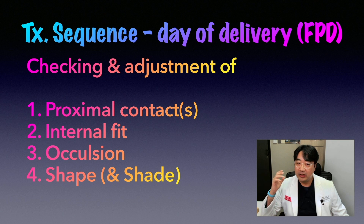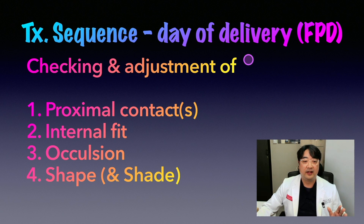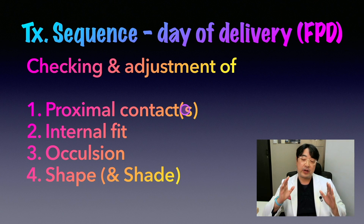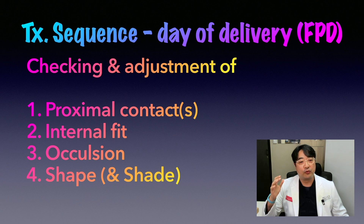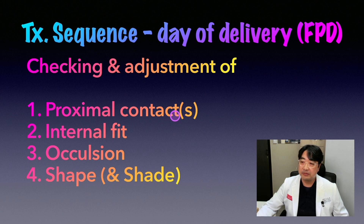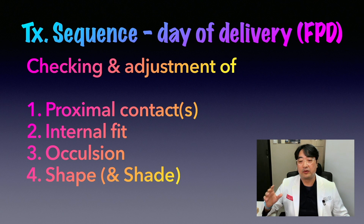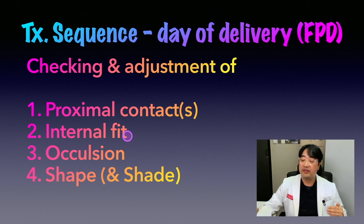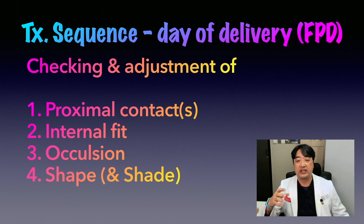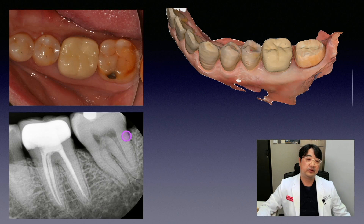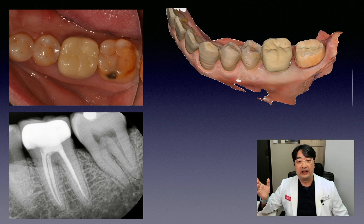These are the clinical steps we follow on the day of crown or any fixed restoration seating. We need to check and adjust proximal contacts first. If proximal contacts are too tight, the crown will not seat all the way down. After adjustment of proximal contact, we need to check the internal fit to see if the crown seats properly and closes all the margins, then proceed to occlusal adjustment. These are the steps we should do for every single restoration. Here I have a case requiring a single crown for the lower left second molar because of a crack and fracture of the tooth.